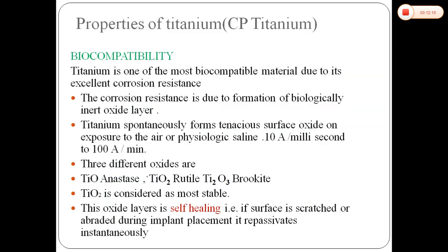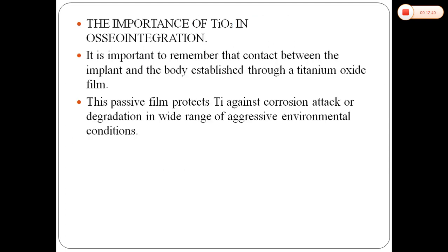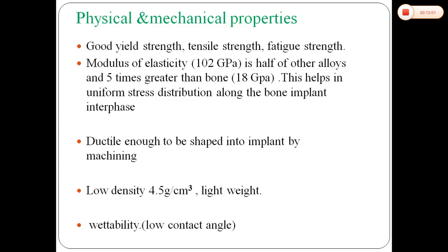The properties of titanium, although already discussed, will be explained again. Regarding biocompatibility: titanium is one of the most biocompatible materials due to its excellent corrosion resistance. Corrosion resistance is due to the formation of a biologically inert oxide layer. It is important to remember that the contact between the implant and the body is established through a titanium oxide film. This passive film protects the titanium, preventing corrosion, attack, or degradation across a wide range of aggressive environmental conditions. Its modulus of elasticity is 102 GPa, which is half of other alloys and five times greater than bone, helping in uniform stress distribution around the bone-implant interface.